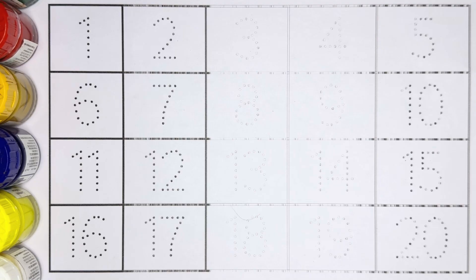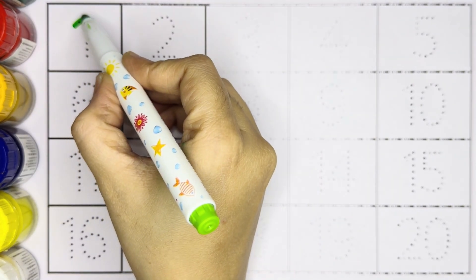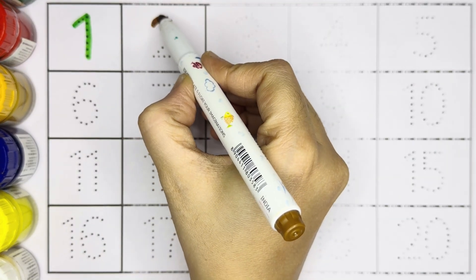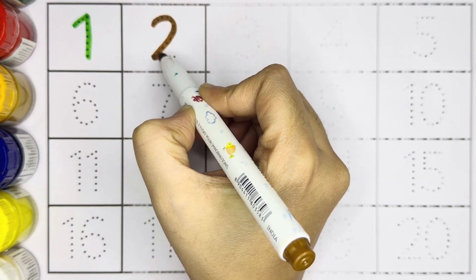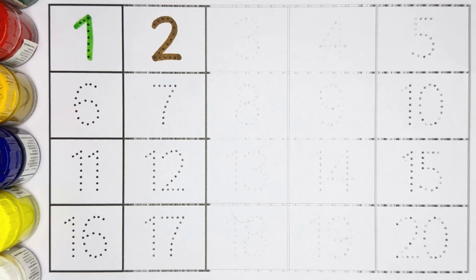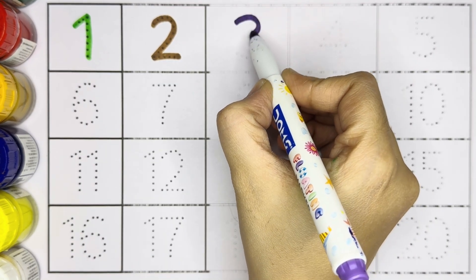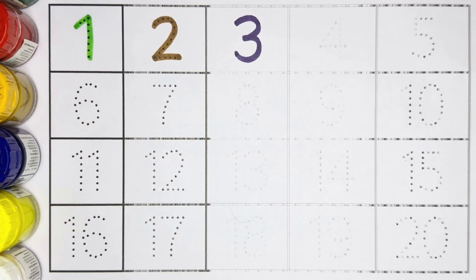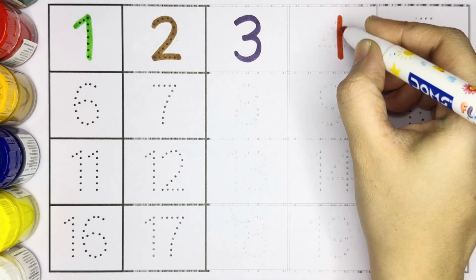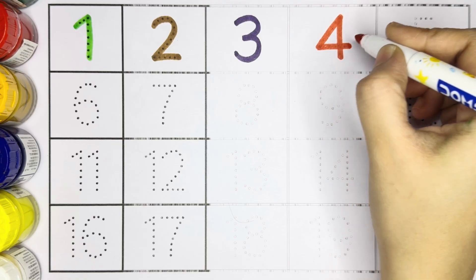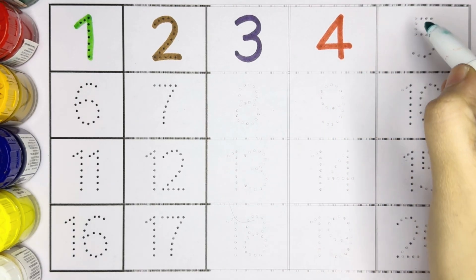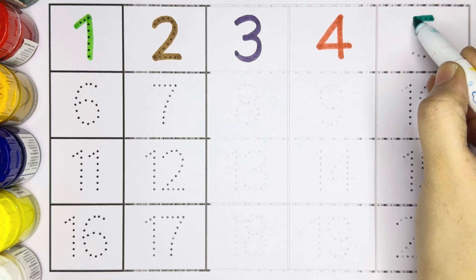Now let's trace the numbers. 1, number 1, green color. Number 2, number 2, brown color. Number 3, violet color. Next number is 4, dark pink color. Now which number kids? 5, number 5, dark green color.